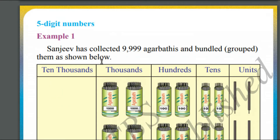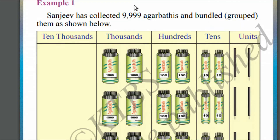Now let us take example one. Sanjeev has collected nine thousand nine hundred and ninety-nine agarbathis and bundled them grouped together. Nine thousand nine hundred and ninety-nine — nine is in the units place. In the units place, Sanjeev placed nine agarbathis.